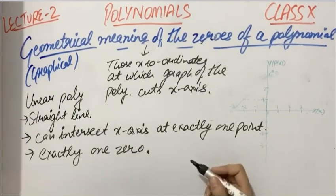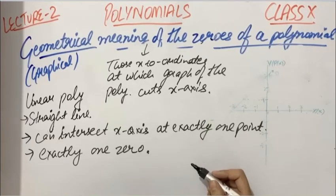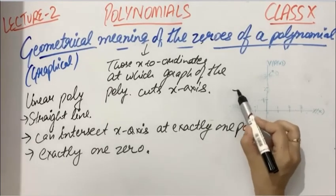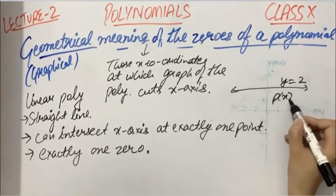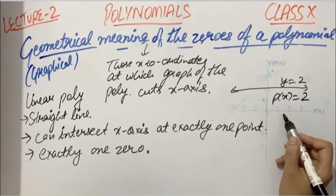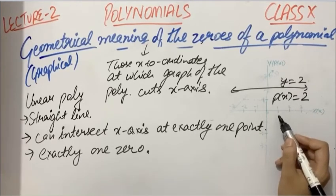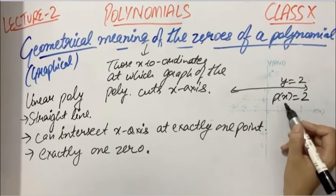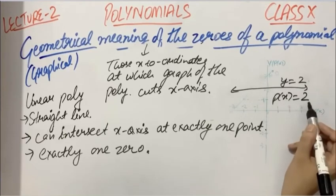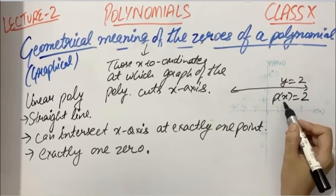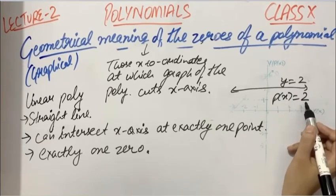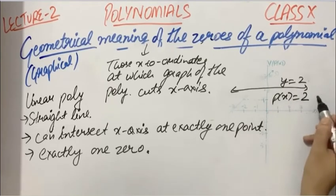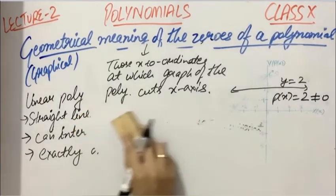Now there will be some straight lines that won't intersect the x-axis at all. For example, this line y = 2, which is basically P(x) = 2, a constant polynomial. The graph of a constant polynomial will never intersect the x-axis. The reason is that you won't find any x that makes 2 equal to zero. The polynomial can never attain a zero value because its value is constant at 2, so at any x its value won't be zero. Which means a constant polynomial has no zero.